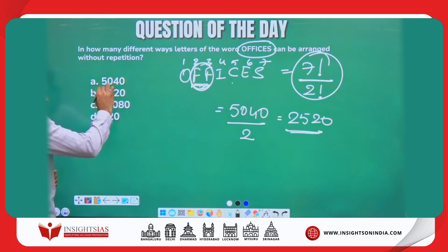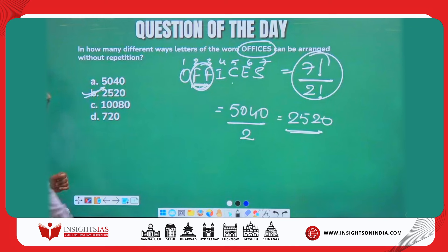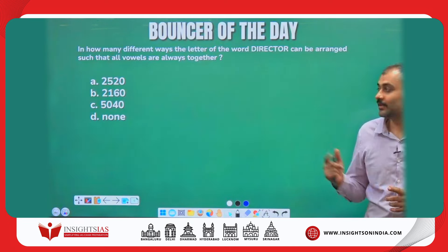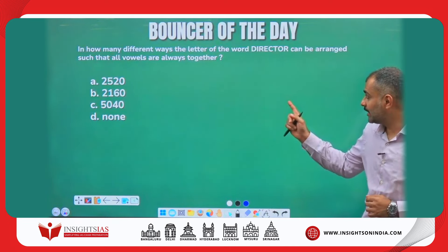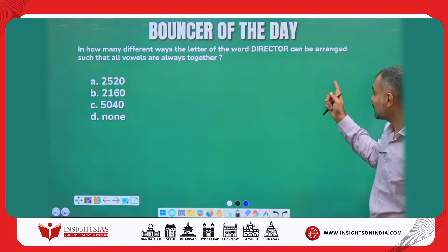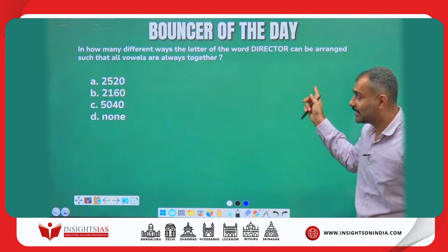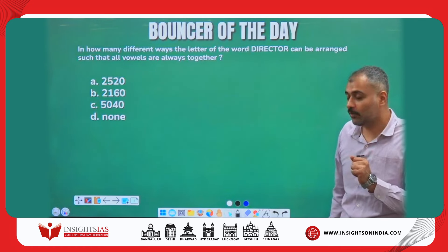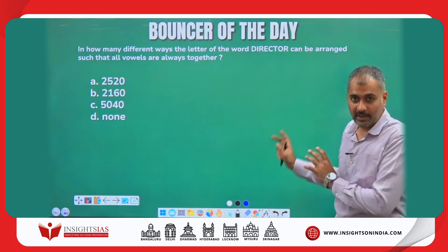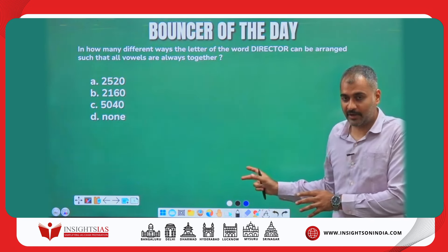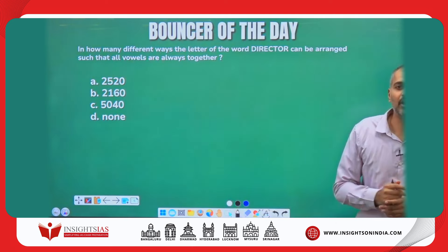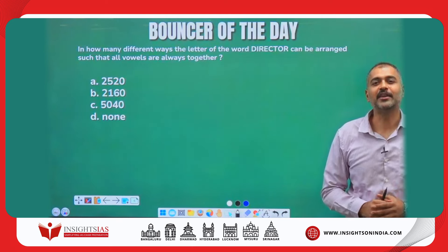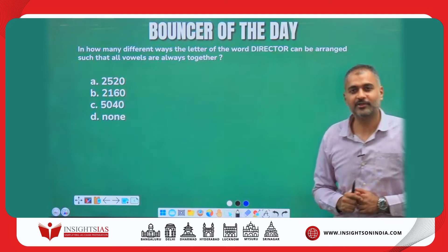Now try to answer this practice question: in how many different ways can the letters of the word DIRECTOR be arranged such that all vowels are always together? It is very similar to what we did in this video. Try to solve it and put your answer in the comment section. Thank you, I will see you in the next video.